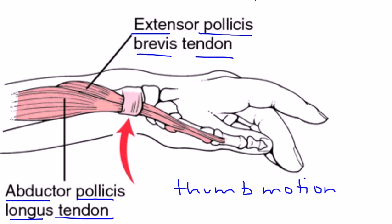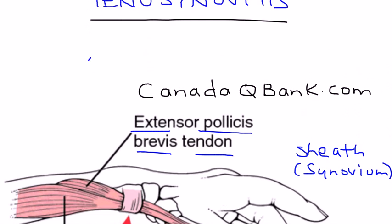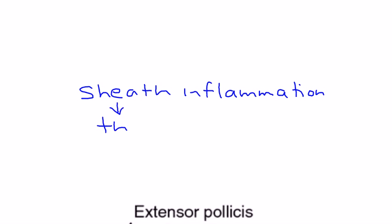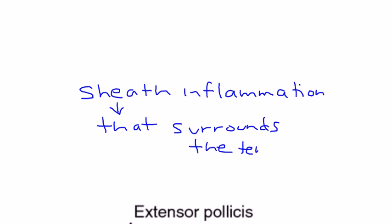These tendons are covered by a sheath, and that sheath or synovium essentially produces an oily fluid that helps the tendons move freely. What happens in tenosynovitis is that sheath becomes inflamed — you have inflammation of the sheath surrounding those tendons.